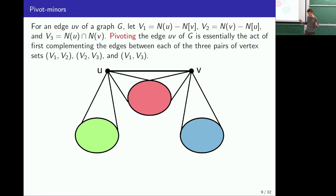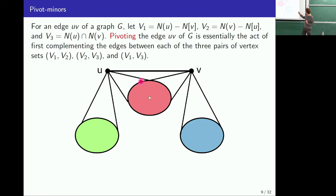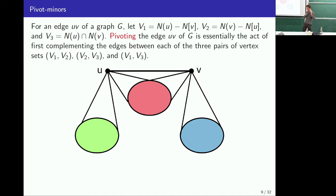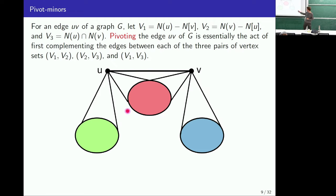Pivot minors are very different to graph minors — there's no edge contraction. We're going to be complementing certain sets of edges in the graph. For pivoting on an edge UV, we look at the common neighbourhoods and individual neighbourhoods of U and V: the neighbours that U has that are not neighbours of V, the individual neighbourhood of V, and their common neighbourhood.